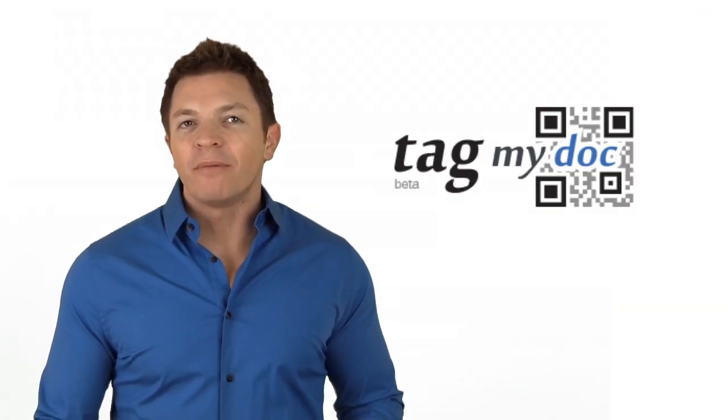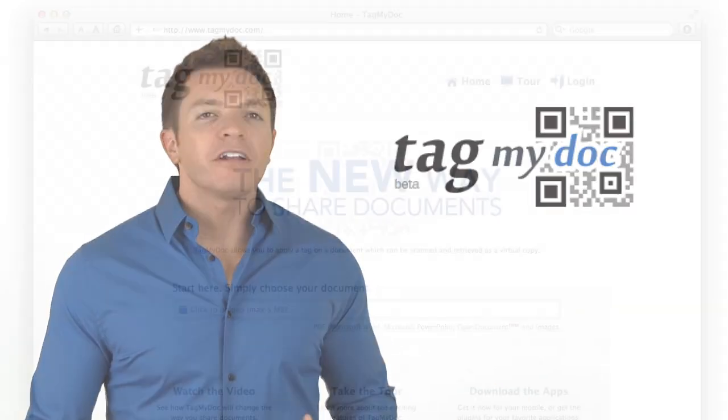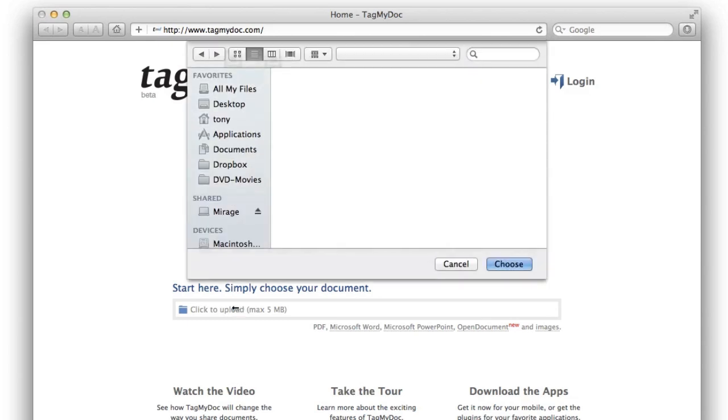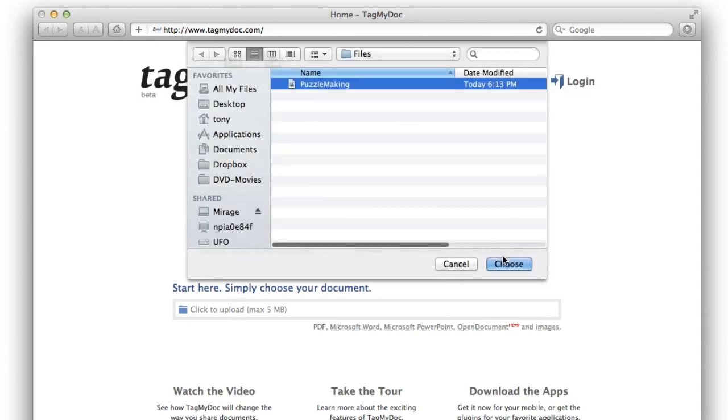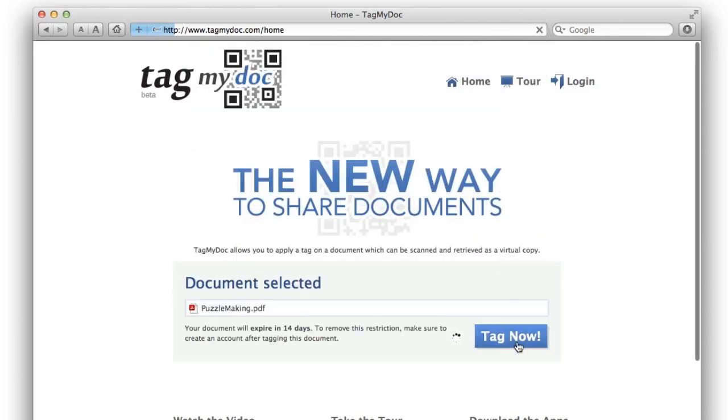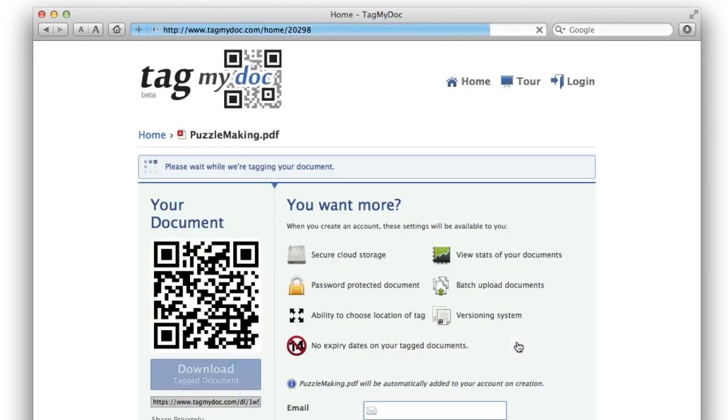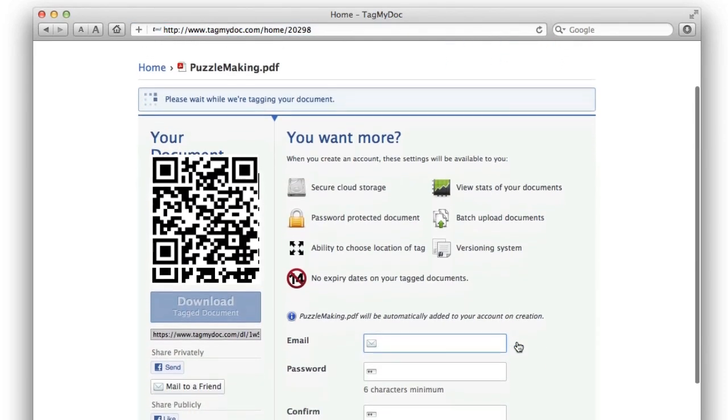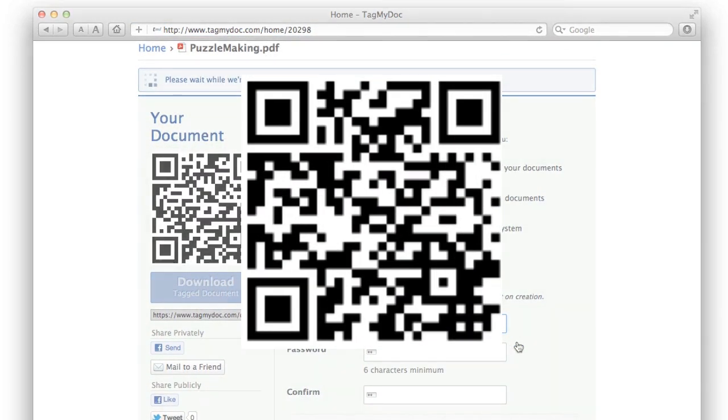Similarly, TagMyDoc.com is a website where you can upload a PDF, Office document, or image, and it will host the file and make a QR code so others can download it. In just a few steps, your file is online and accessible through the code that TagMyDoc provides.